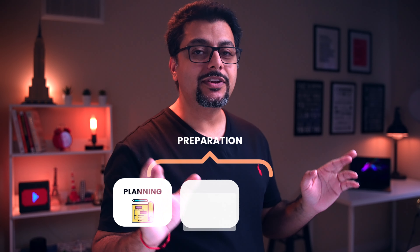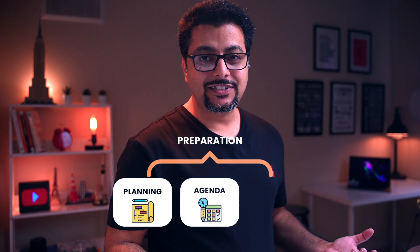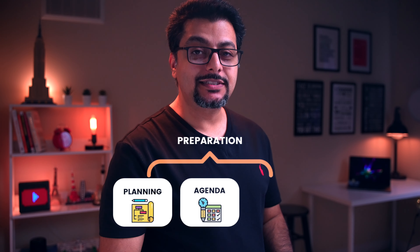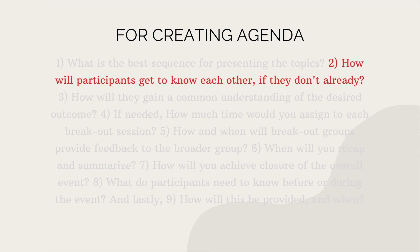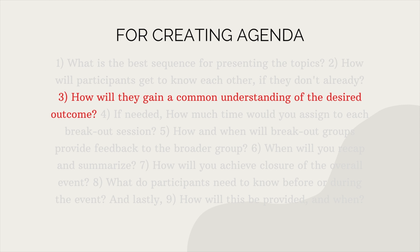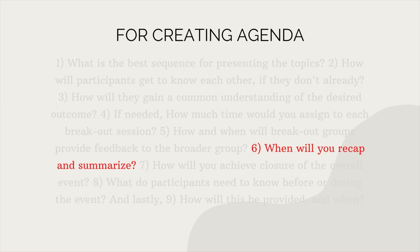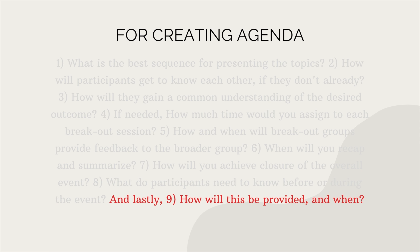The second component of preparation is creating a realistic agenda — emphasizing realistic. Choosing the facilitation approach and designing the agenda go hand in hand; you begin to visualize the event in your head as you iterate between selecting the facilitation process and drafting the agenda. To help you write a proper meeting agenda, answer these nine questions: What is the best sequence for presenting the topics? How will participants get to know each other, if they don't already? How will they gain a common understanding of the desired outcome? If needed, how much time do you need for breakout sessions? How and when will breakout groups provide feedback to the broader group? When will you recap and summarize? How will you achieve the closure of the overall event? What do participants need to know before or during the event? And how will this be provided and when? Having a solid agenda will focus everyone's attention on the desired outcome and provide good flow and structure to the event.